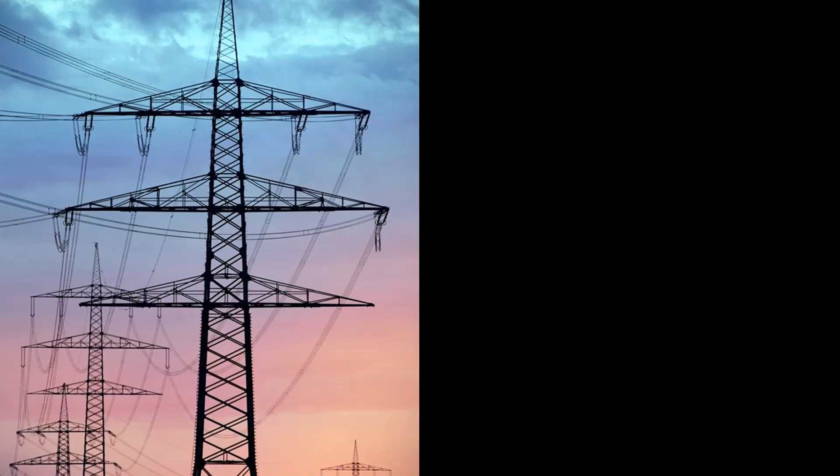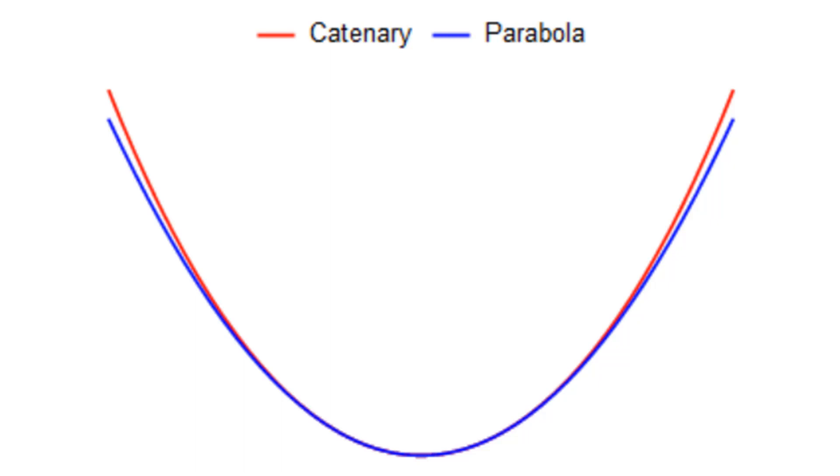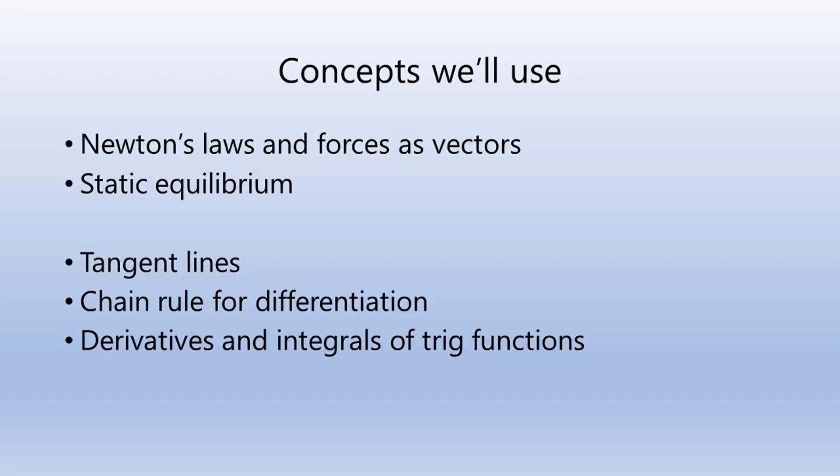From electric lines to spider webs, any cable that we suspend at the ends and allow to hang under its own weight can be described mathematically by a catenary. Using only introductory calculus and some basic physics, let's derive the formula for a catenary.